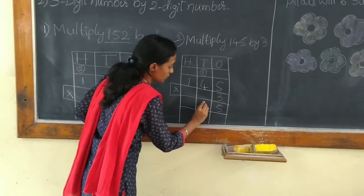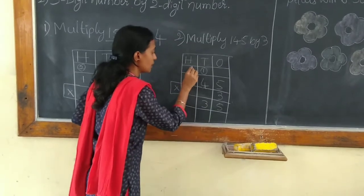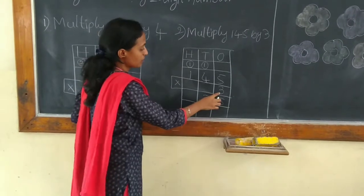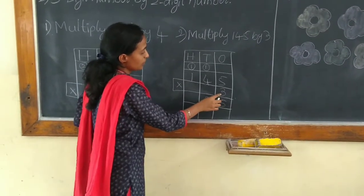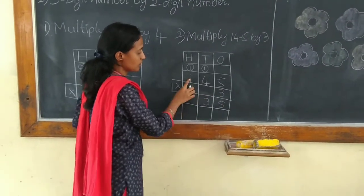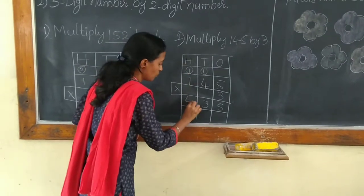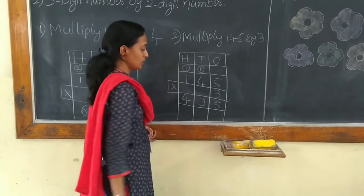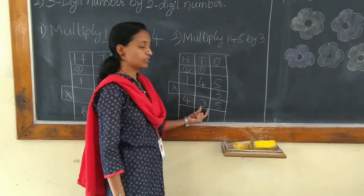Carrying 1 to place at the 100's place. And 3 to place at the 10's place. Next, multiply 3 with 1. 3 times 1 is 3 plus 1 will be 4. So when you multiply 145 by 3, you will get the product 435.